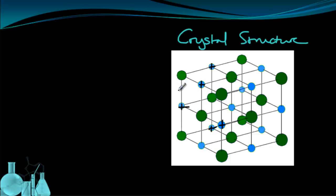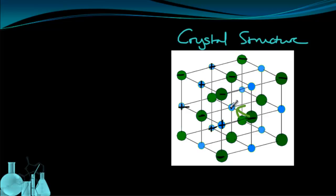What happens is that each positive charge is attracted to the negative charges surrounding it. For example, this one positive charge is surrounded by this negative charge, this negative charge, this one, and this one. And this negative charge is also surrounded by positives in every direction. When we talk about properties of ionic compounds in the future, this idea of the crystal structure is going to be very important.